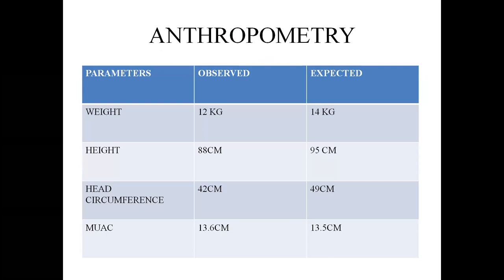Anthropometry: weight 12 kg against expected 14 kg, height 88 cm against expected 95 cm, head circumference 42 cm against expected 49 cm, mid-upper arm circumference 13.6 cm against expected 13.5 cm. Separate Down syndrome growth charts exist but are based on Western children — no Down syndrome-specific growth charts are available for Indian children. Using normal charts will mostly show stunting and wasting, so that context should be noted.